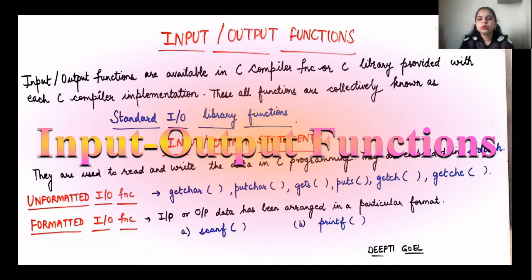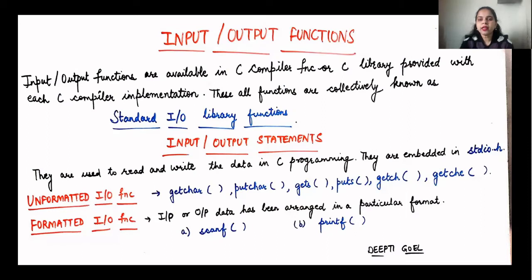Welcome students. In this module we shall be discussing about the input output functions — the formatted input output functions. The input output functions are available in the C compiler library that is provided with each C compiler implementation. So whenever you install a C compiler, it has its own library, and the library has the input output functions. Those functions stored in the input output library are collectively called the standard input output library functions.